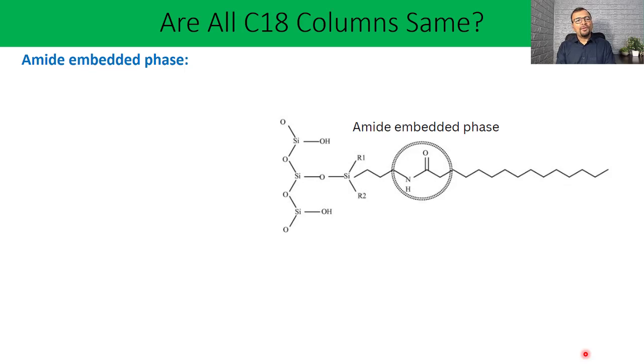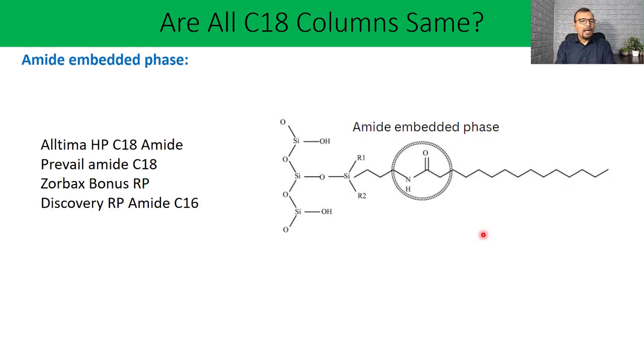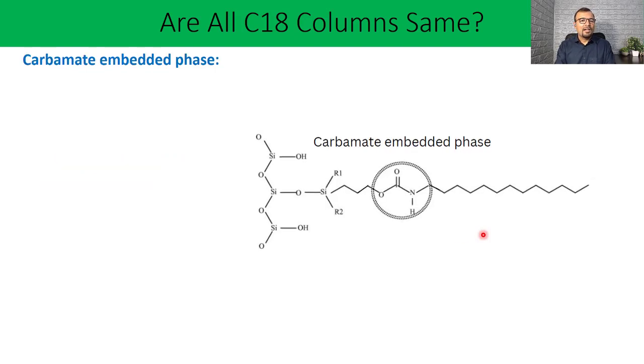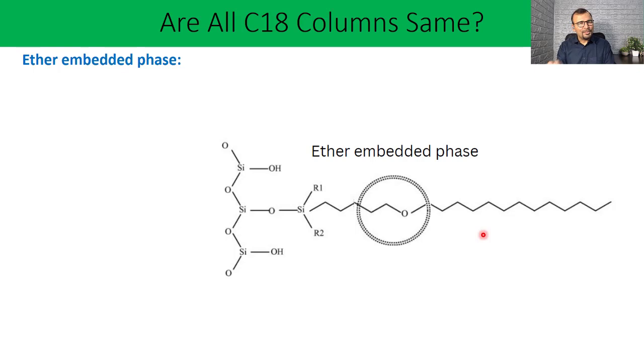This is the first example of amide embedded C18 stationary phase. You can see that this amide group is embedded in the C18 chain. Amide is a polar functional group and that is going to make the column polar. These are commercial examples of amide embedded phases like Ultima HP C18, Prevail Amide C18, or Zorbax Bonus RP. Carbamate is another polar functional group which has been used in many C18 stationary phases, and Xterra RP18 or Symmetry Shield RP18 are commercial examples of this particular stationary phase. Ether embedded phase contains ether, which is not much polar but still can help in increasing the polarity of the stationary phase, and Polaris Ether C18 is the commercial example.